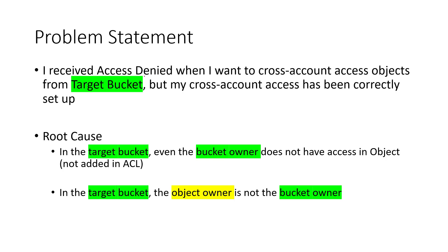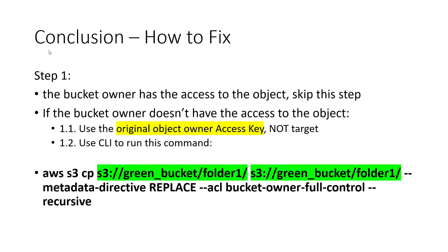The problem statement is: I received an access denied error when I want to access some objects related to cross-account, but my cross-account access has been correctly set up. The root cause is one of two things: either the bucket owner is not added into the object ACL, or in the target bucket, the object owner is not your bucket owner. Because the issue is a little bit hard to teach, in today's video I'm going to jump into the conclusion and tell you how to fix it.